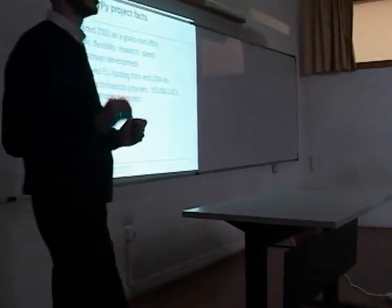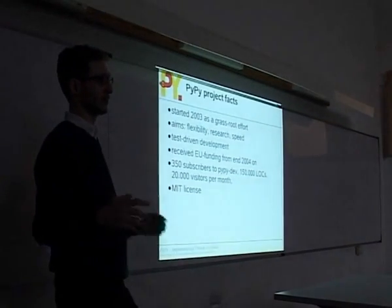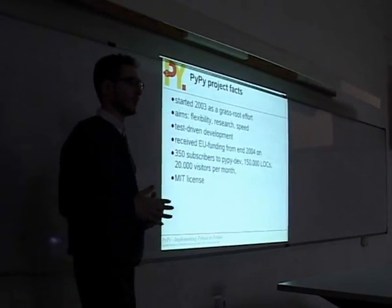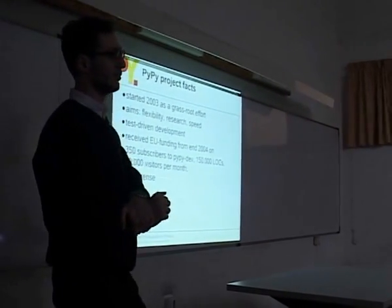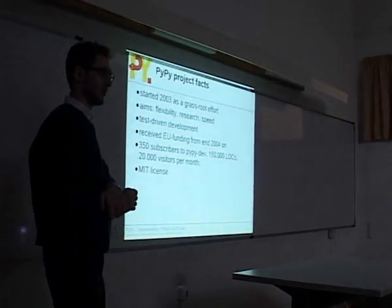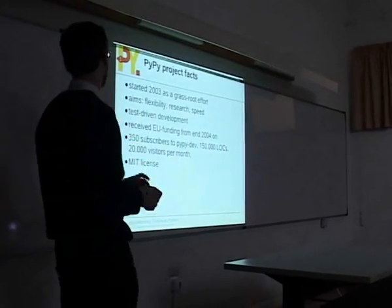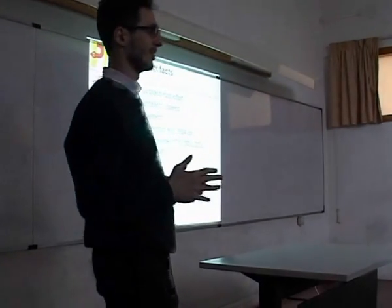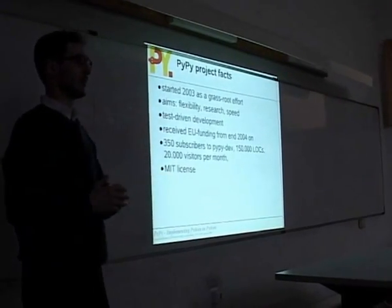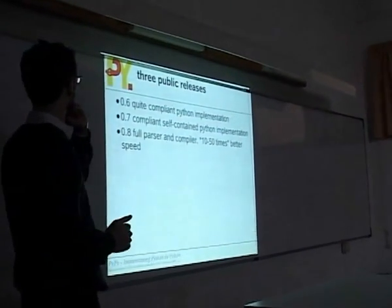The project is divided into phases. The first phase was about finishing this Python implementation written in Python and having a first version of the translation toolchain that can produce a self-contained PyPy translated to C. We have around 350 subscribers on our PyPy-dev mailing list. We wrote quite a bit of code — 150,000 lines total, though the interpreter itself is probably only 50,000, with the rest being tests and the translation toolchain. We use the MIT license and have had three public releases so far.